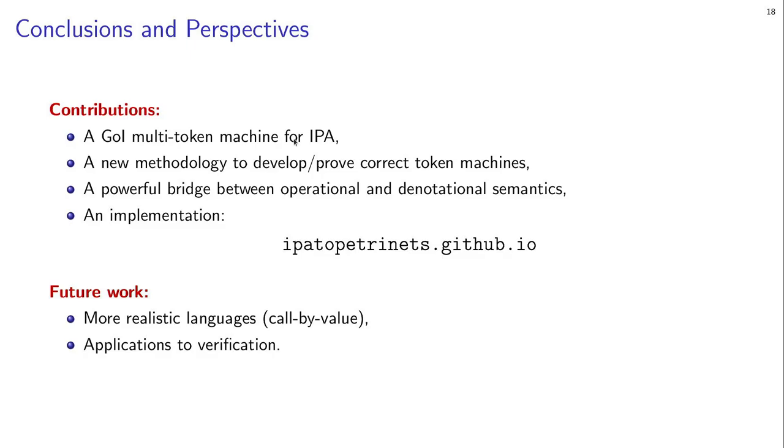So that's the gist of it. So what we have done is a geometry of interaction multi-token machine for IPA. So this is, in fact, there is a quite active line of work, trying to define token machines or multi-token machines for increasingly complex languages. So this is a contribution to that line of work, but we also provide a new methodology because the way we do it is original. And so I think this new methodology may be interesting in other settings to develop multi-token machines or prove them correct by linking them with the game semantics. So as I argued at the beginning, it also gives us a powerful bridge between operational and denotational semantics. And we have implemented this.